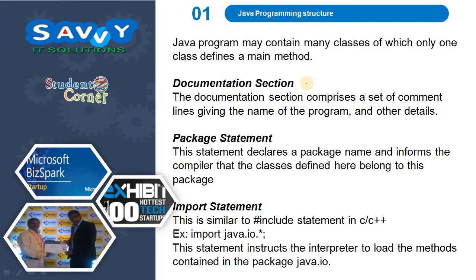Java Programming Structure may contain many classes, of which only one class defines a main method. The first one is the documentation section. The documentation section comprises a set of comment lines giving the name of the program and other details, including a small description about the program and the name of the author.